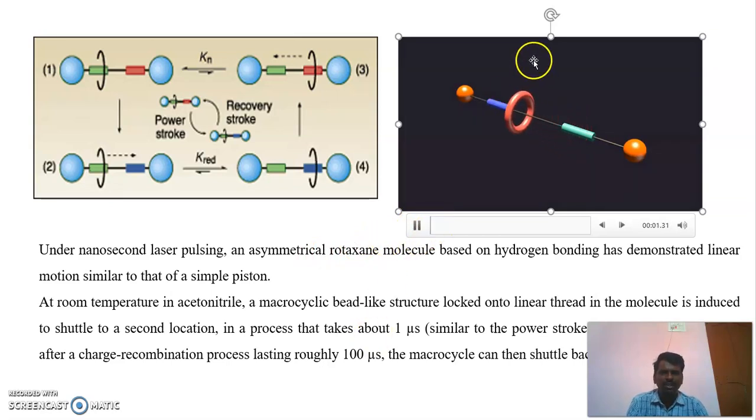In this animation, laser light is allowed to pass on this particular position. When the laser light comes here, it makes chemical reactions. Due to the attractive or repulsive forces between this chain and this particular portion, the chain moves from one side to the other side.